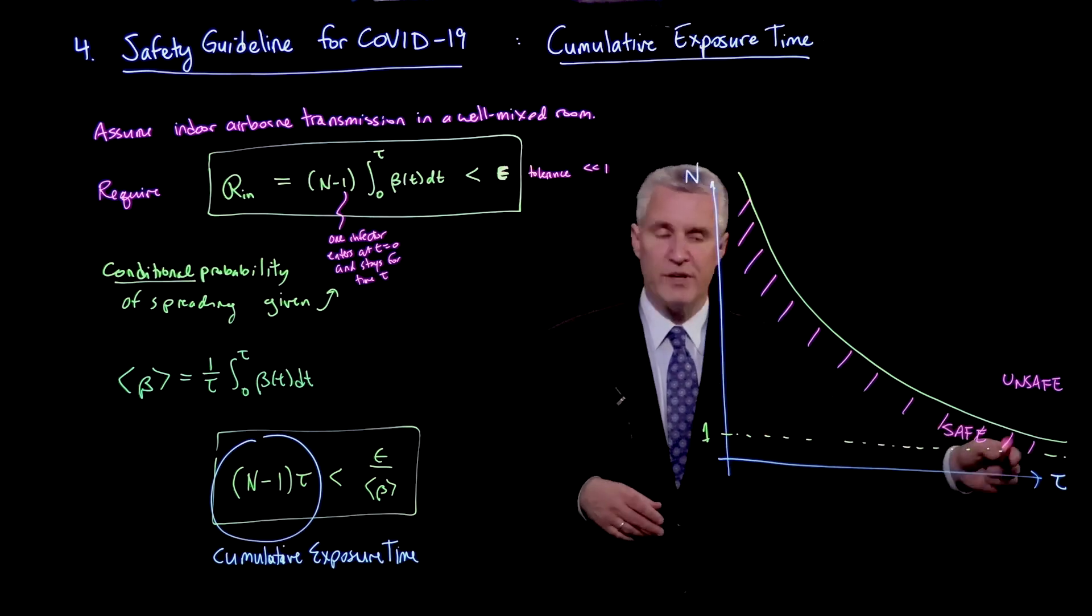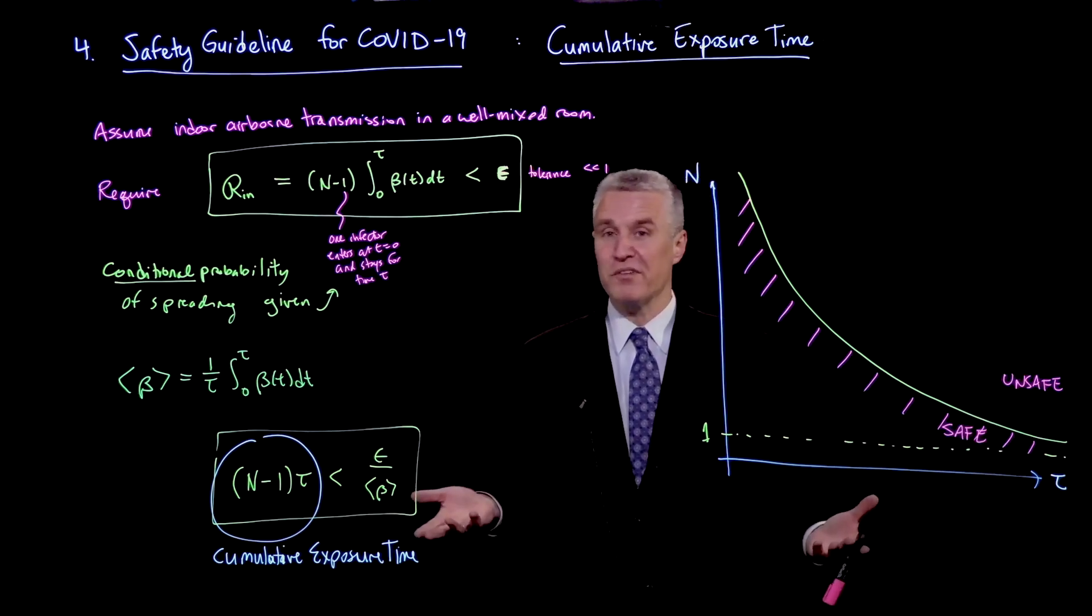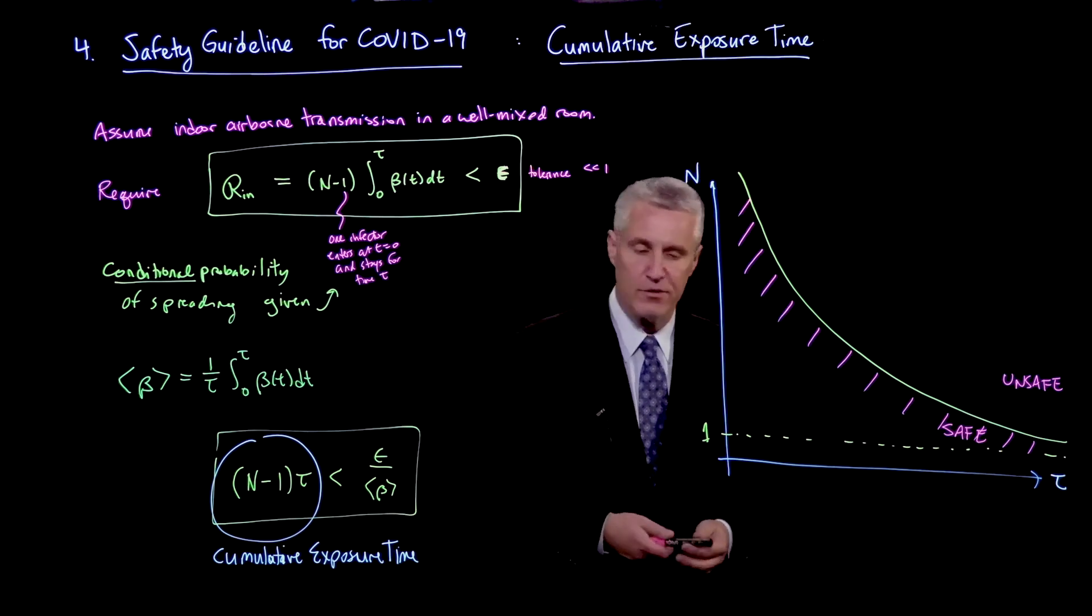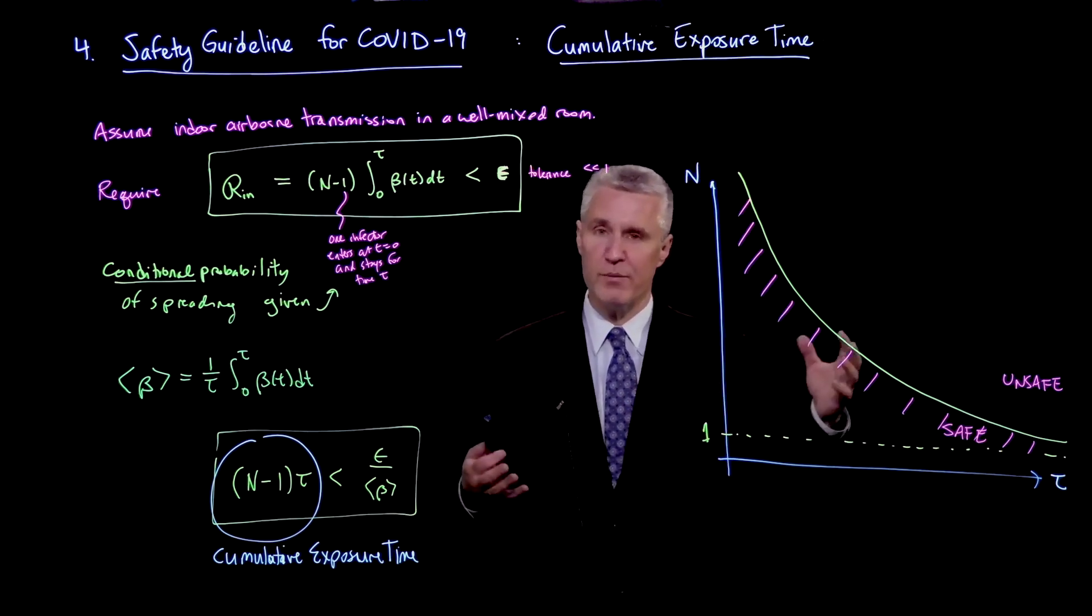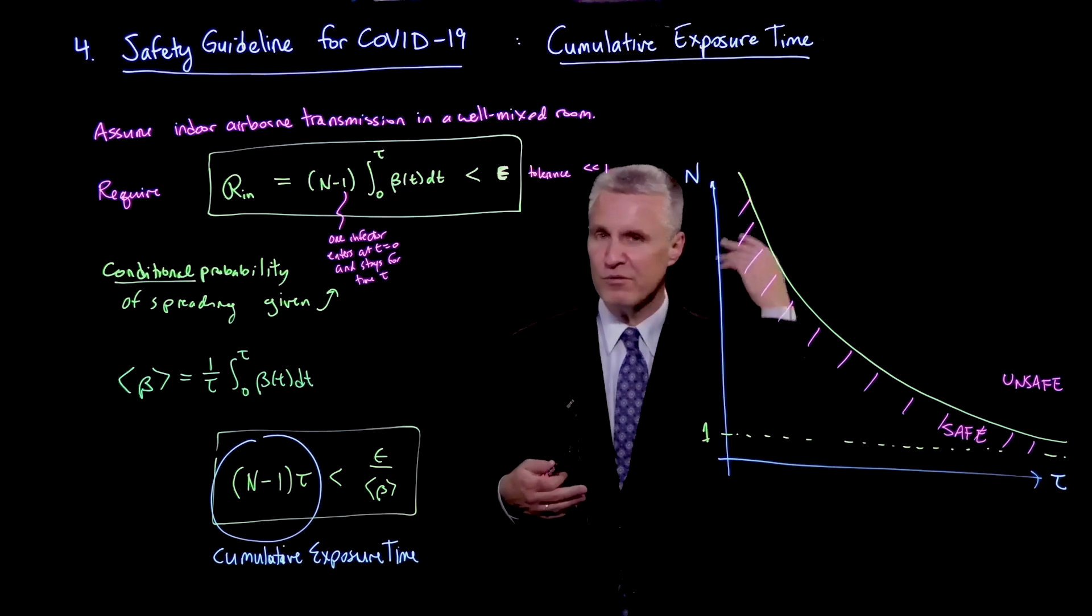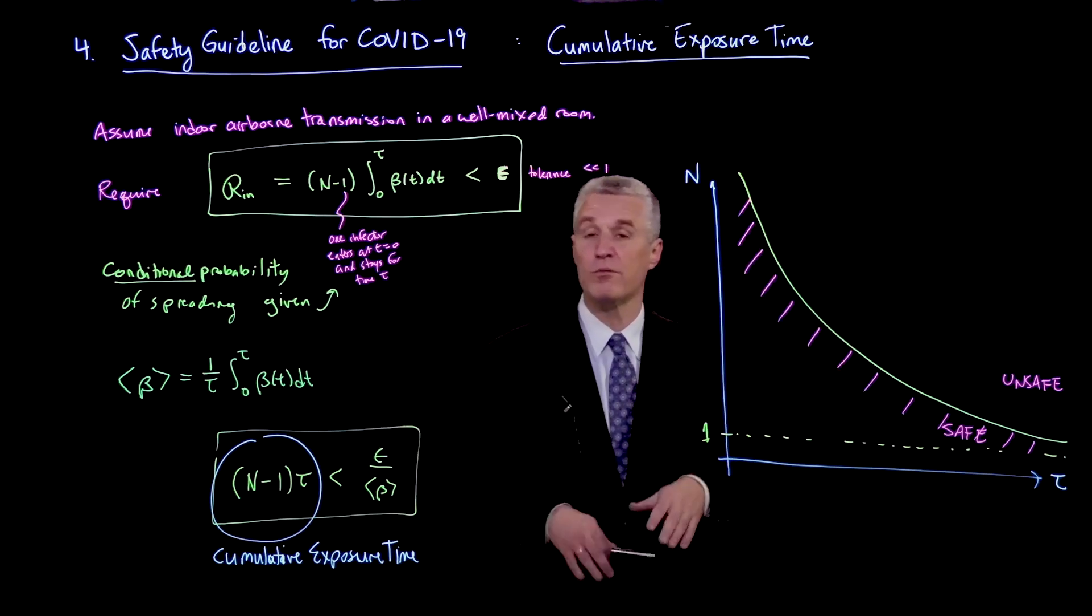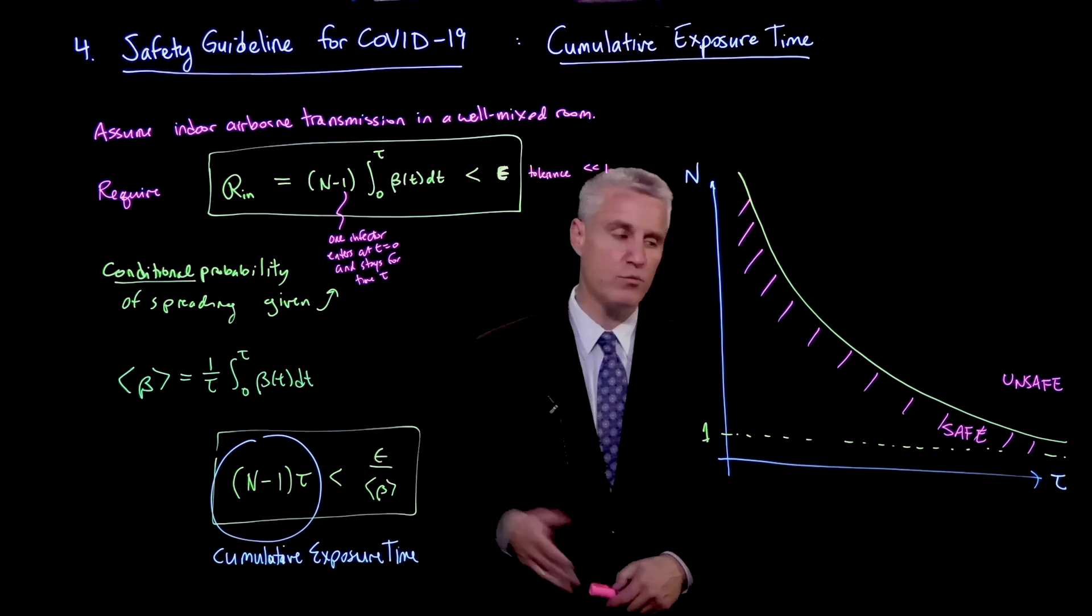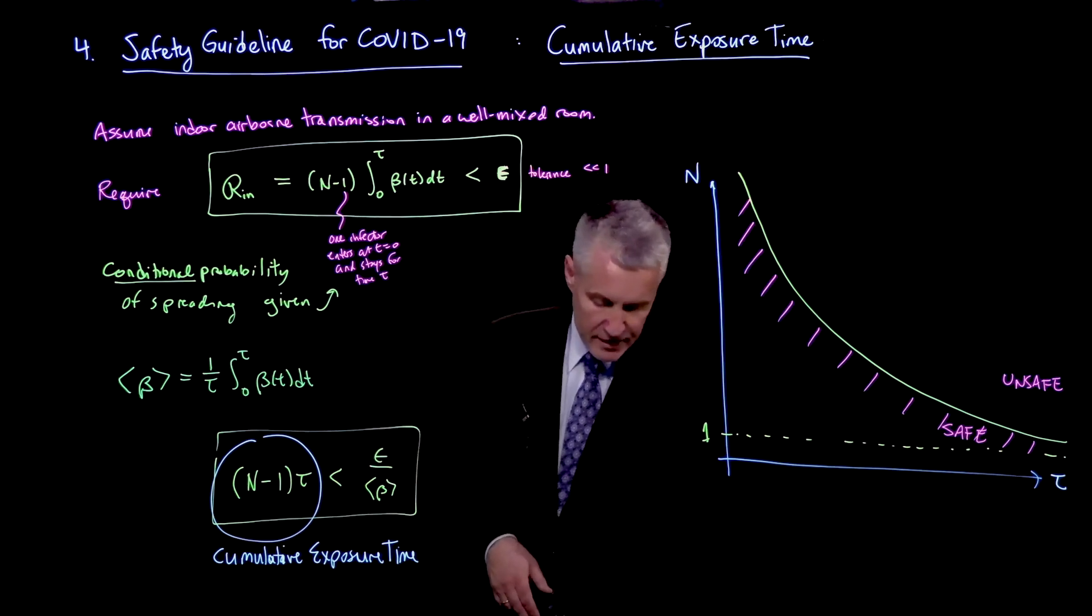It saturates at 1, because it'll never go below 1, because if it's 1 person, you're not going to transmit to anybody. And so it's OK. So an occupancy of 1 is OK, except in a building where perhaps other people have come and gone from that room, or ventilation is bringing particles from other rooms, and we'll come back to that. But just at the simple level of analyzing 1 room, obviously 1 is fine.